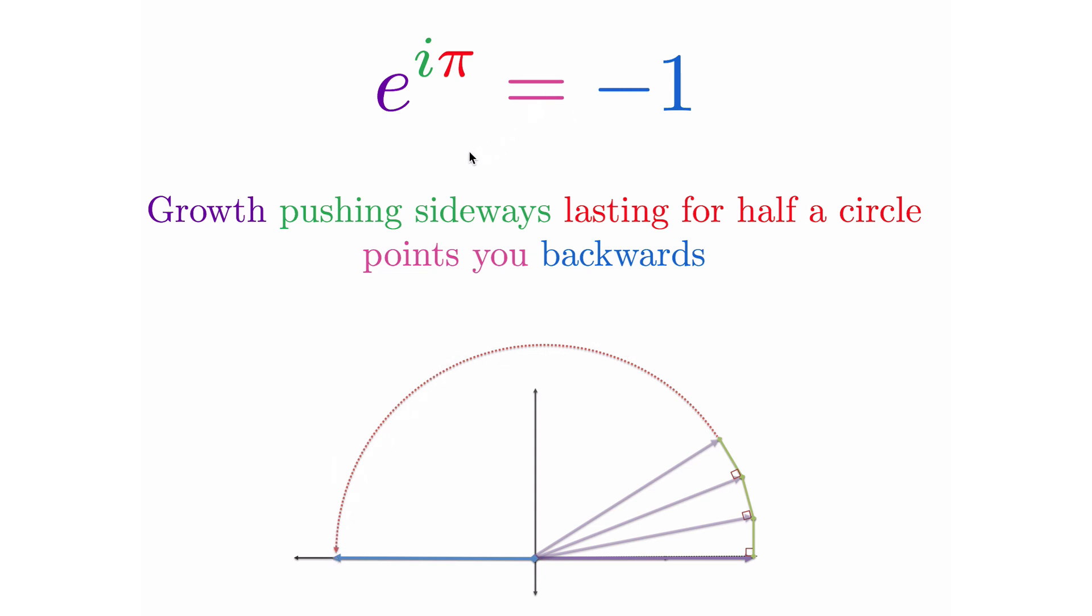We have growth, but it's going sideways, and we have enough fuel in the growth engine to point us backwards. So this equation here is saying, okay, this system, growth pushing sideways with enough fuel to last for half a circle will ultimately point you backwards to negative one. You start at one here. That's the implied starting point. One times this. You grow sideways with enough fuel to go half a circle, and you'll end up backwards. So the key here is that we understood a concept that was baffling with a very simple diagram or analogy.